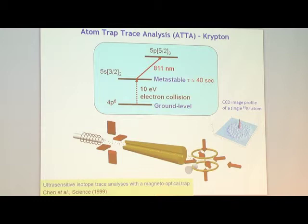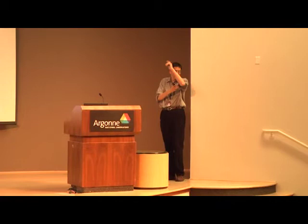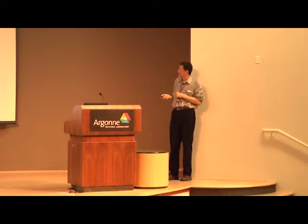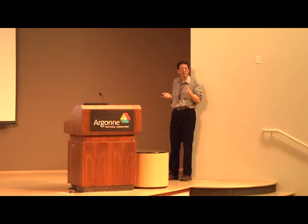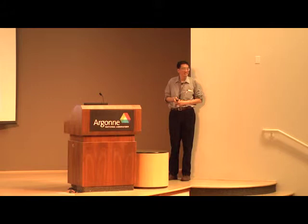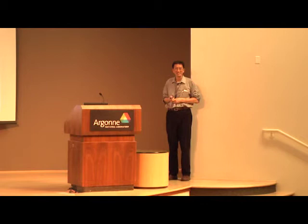Question: Is that also how you stay on resonance while slowing down? Answer: Yes, that's another Nobel-winning idea — Bill Phillips' Zeeman slower. You have a laser beam going one way and atoms coming the other way. As the atom slows down, the Doppler shift changes. Phillips had the brilliant idea to wind a solenoid unevenly so the varying Zeeman shift cancels the changing Doppler shift. He got a Nobel Prize for that — well, he did a lot more work than just that.